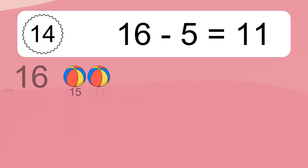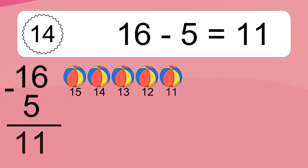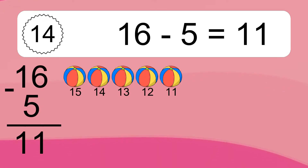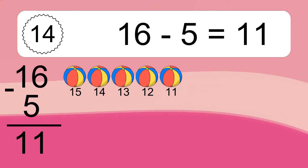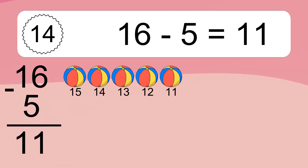16 minus 5 equals what? 16 minus 5 equals 11. Let's count it: 15, 14, 13, 12, 11.